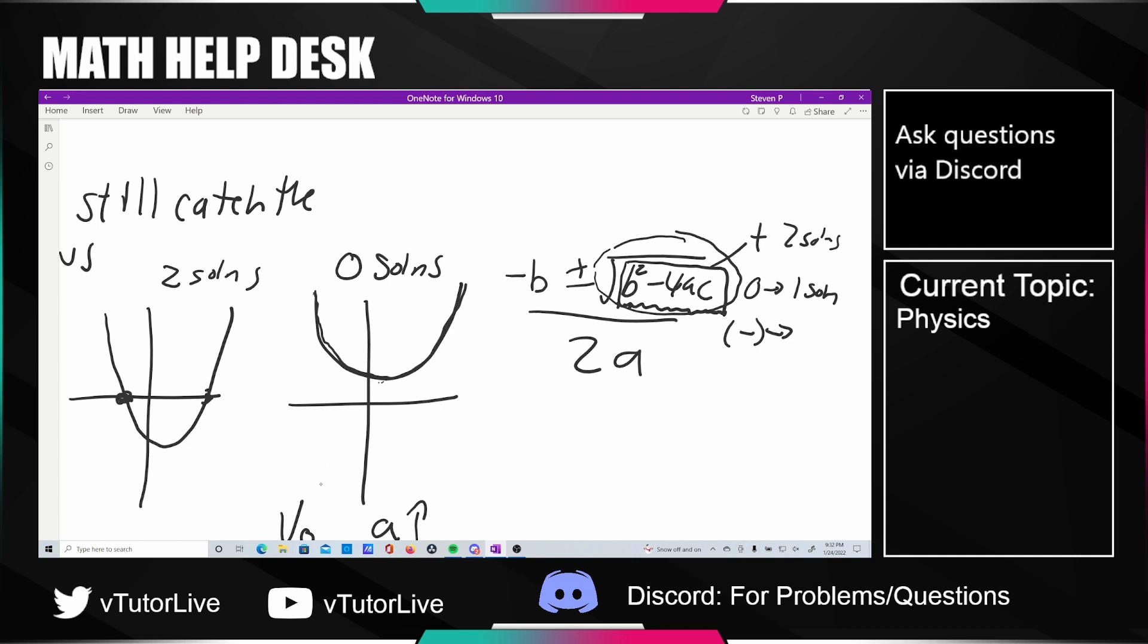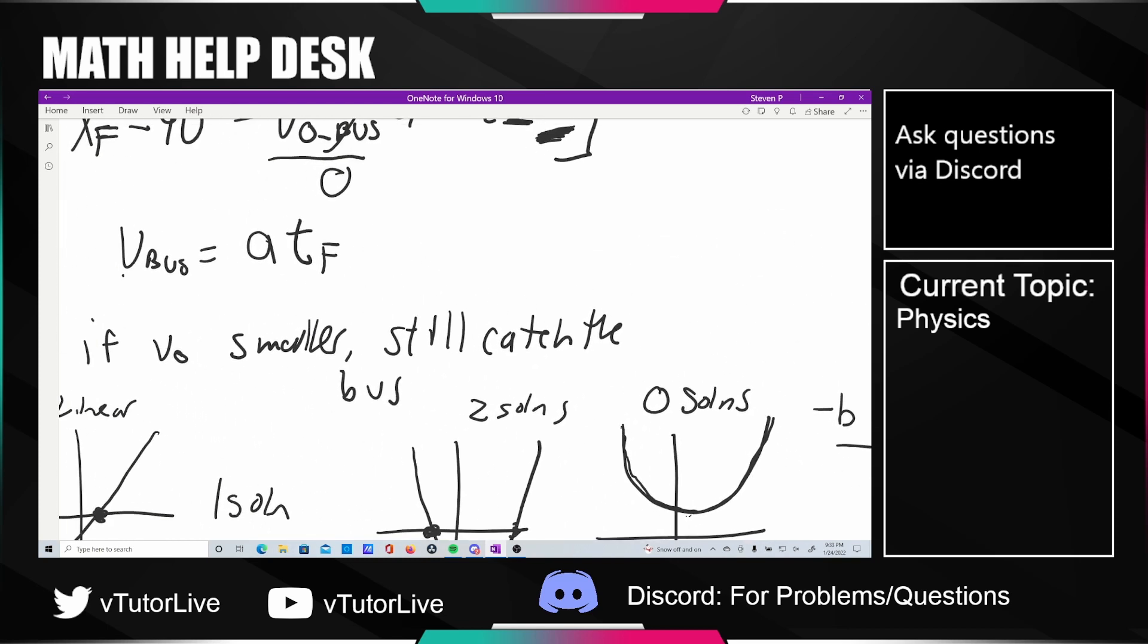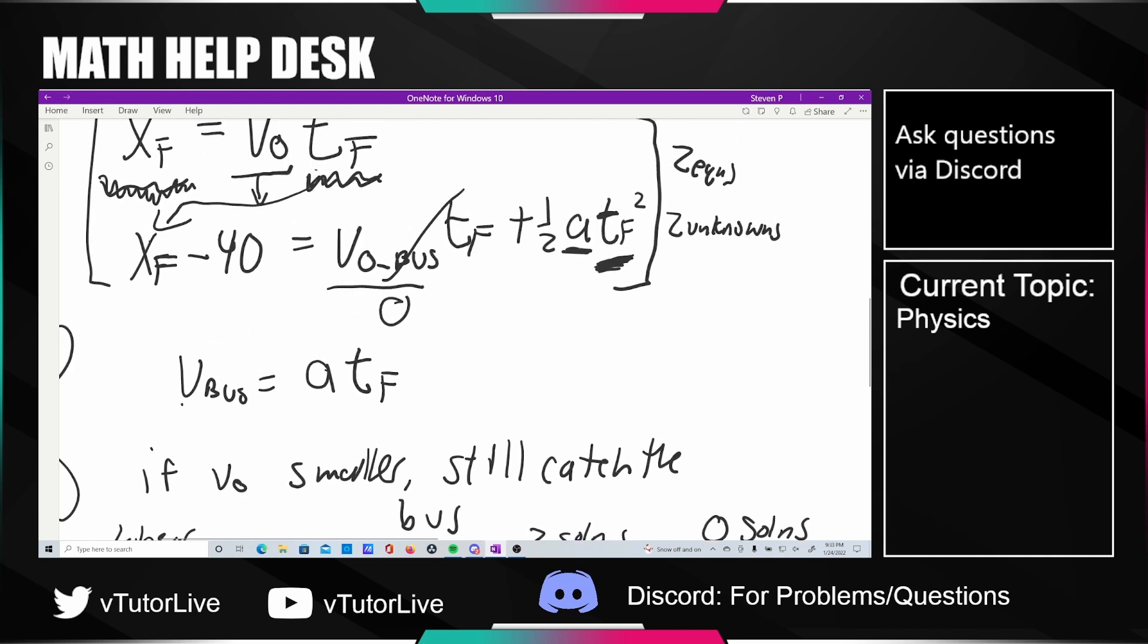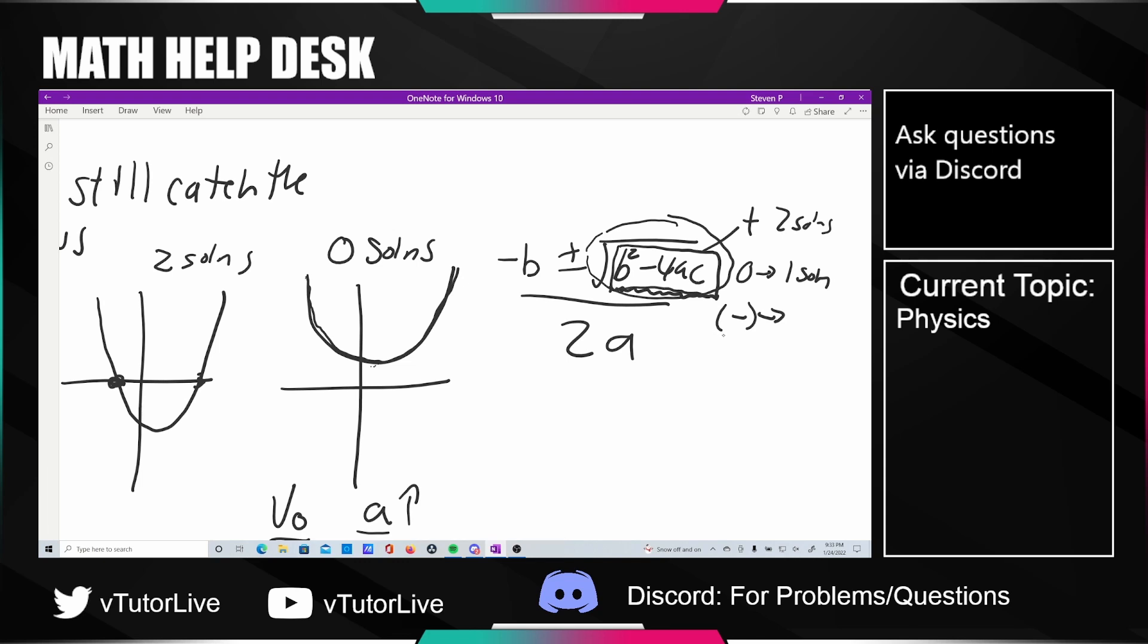A negative value in the discriminant correlates to graphs that are sort of lifted up and not touching the x-axis. The question was essentially asking us, if given a certain small top speed will you catch the bus? To do that you just got to take a look at the quadratic equation in terms of t_f and check the discriminant. If it turns out that it was negative it would have been no solution. What that's saying is that there does not exist any time at which the two of them have the same position.